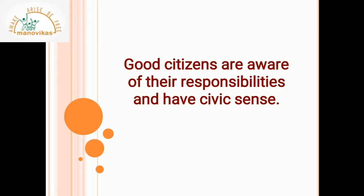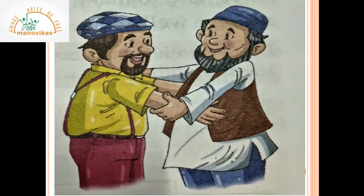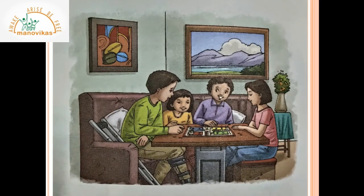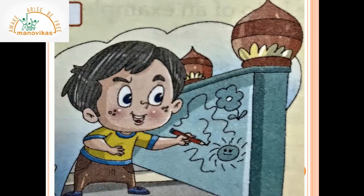Students, now I want you all to see the pictures and tell me which of them display civic sense. The first picture displays civic sense — it tells us that we should live in harmony with our neighbors. The second picture too displays civic sense — it shows us that we must help children with difficulties and never make them feel lonely; while playing, you can include them in your games. The third picture shows lack of civic sense — it is not correct to scribble or write on a monument.